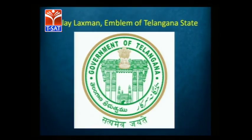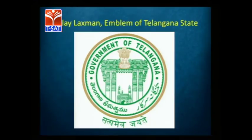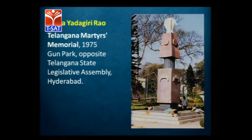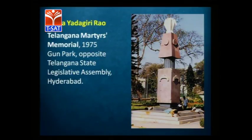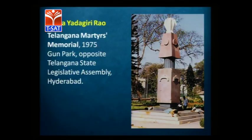These four symbols are the state symbols. The state administrative and political symbol was designed by Lakshmana and features a Kakatiya Torana, the three lion heads of the Indian state, and the Charminar. The Telangana martyrs memorial was done in 1975 by sculptor Ekka Yadgiri Rao and stands right in front of the assembly.